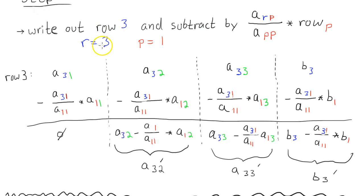So R is equal to 3, and P is equal to 1. So A sub 3, 1, because R is 3, divided by A sub 1, 1, times A sub 1, 1. And you see, right here, that they cancel out. And then you just do the math for the rest of the rows. All the way over. And then you get your modified values for the third row.